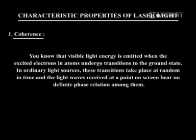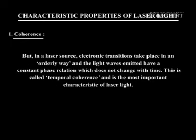Coherence. You know that visible light energy is emitted when the excited electrons in atoms undergo transitions to the ground state. In ordinary light sources, these transitions take place at random in time and the light waves received at a point on a screen have no definite phase relation among them. But in a laser source, electronic transitions take place in an orderly way and the light waves emitted have a consistent phase relation which does not change with time. This is called temporal coherence and is the most important characteristic of laser light.